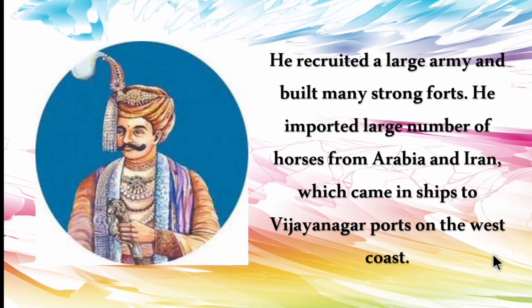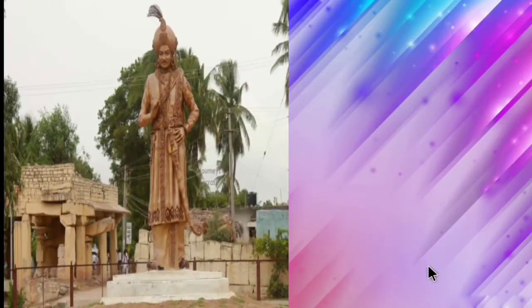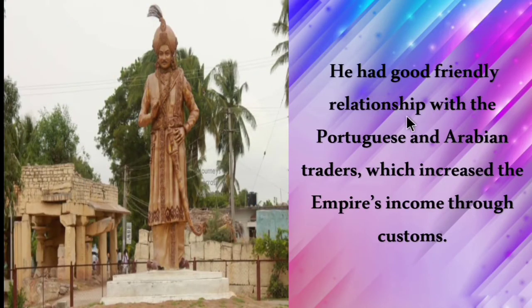He recruited a large army, built many strong forts, and imported a large number of horses from Arabia and Iran, which came by ships to Vijayanagar ports on the west coast. He maintained a good friendly relationship with the Portuguese and Arabian traders, which increased the empire's income through customs.